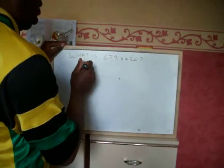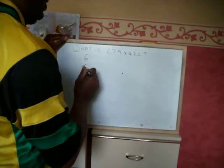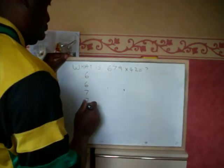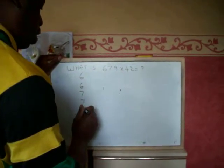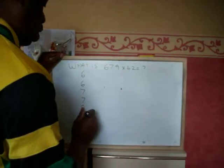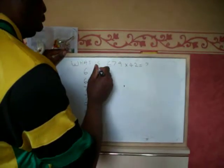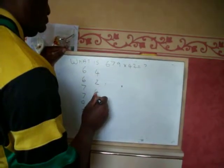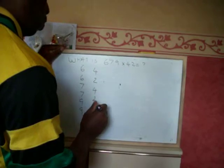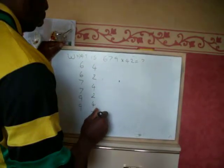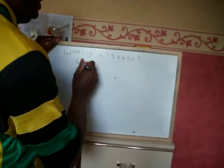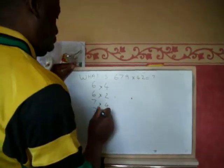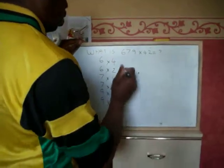Write down the 6, write down the 7, write down the 9. Go 4, 2, 4, 2, 4, 2 times.